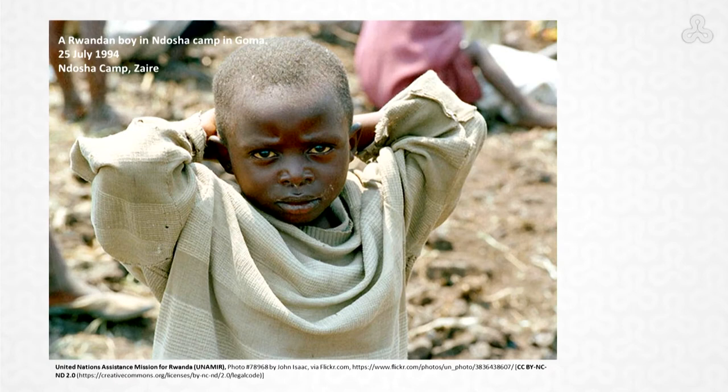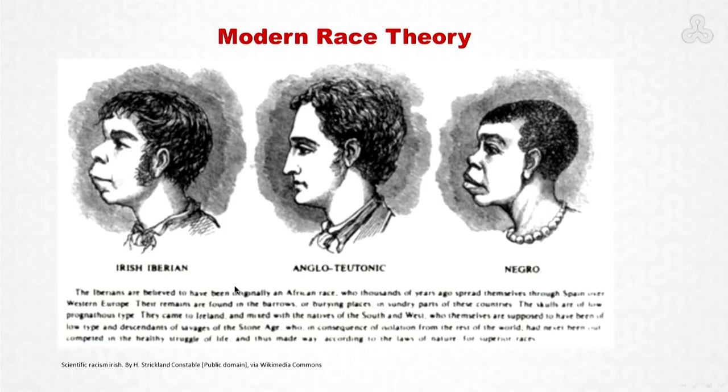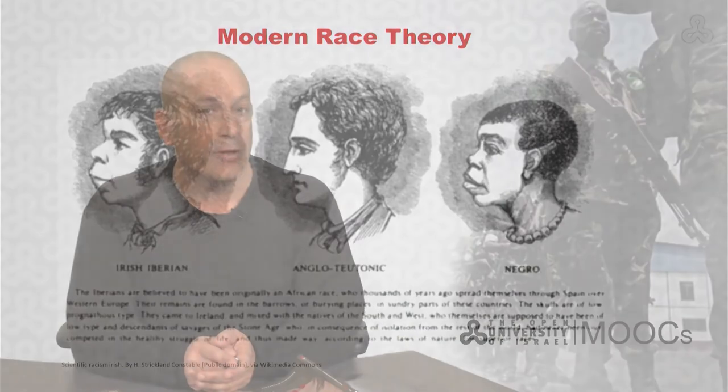The first is the concept of colonialism, an idea we're probably all familiar with. The second concept is modern European racism. At the end of this lecture, I'll bind together our discussion on colonialism and modern European racism, and together we'll try to figure out how these two elements can be considered directly responsible for the hatred that developed between the Hutu majority group in Rwanda and the Tutsi minority group, eventually resulting in the extermination of nearly one million people in 1994.